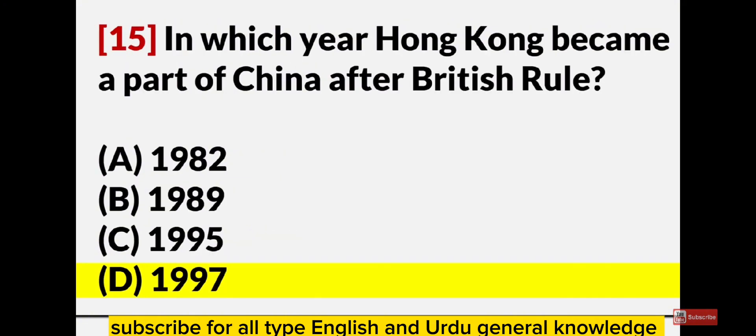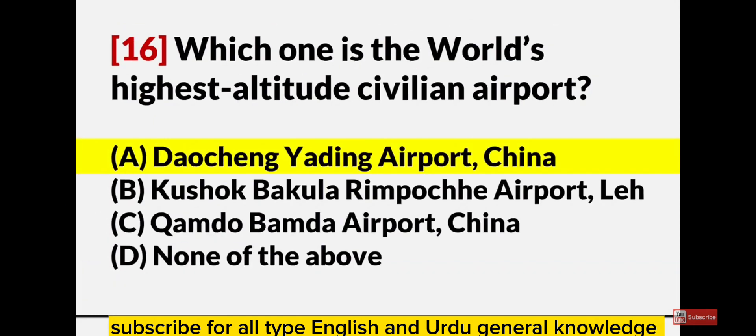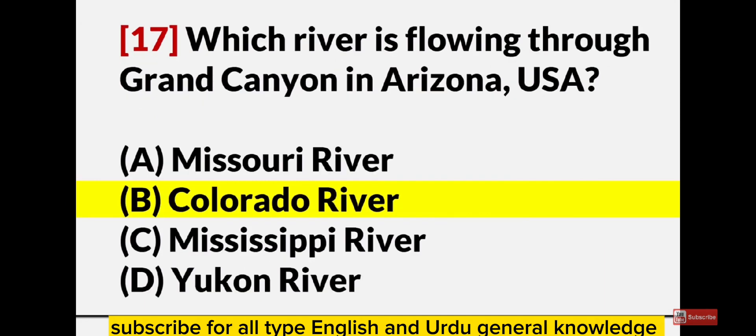In which year did Hong Kong become a part of China after British rule? 1997. Which one is the world's highest altitude civilian airport? Daocheng Yading Airport, China. Which river is flowing through the Grand Canyon? The Colorado River, Arizona, USA.